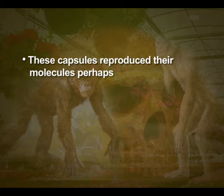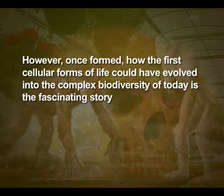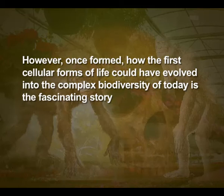We have no idea about how the first self-replicating metabolic capsules of life arose. These capsules reproduced their molecules perhaps. The first cellular form of life did not possibly originate till about two thousand million years ago. These were probably single cells. All life forms were in a water environment only. This version of abiogenesis — that is, the first form of life arose slowly through evolutionary processes from non-living molecules — is accepted by the majority. However, once formed, how the full cellular form of life could have evolved into the complex biodiversity of today is the fascinating story that will be discussed in coming episodes.